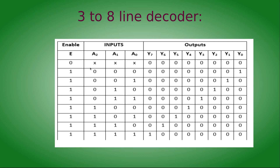When the enable input is zero, all outputs are inactive. When enabled: input 000 activates Y0; input 001 activates Y1; input 010 activates Y2 — and so on. All output combinations are represented in binary form following this pattern.